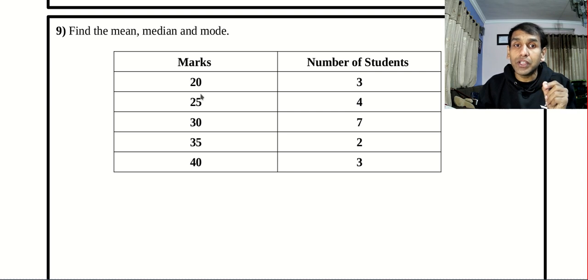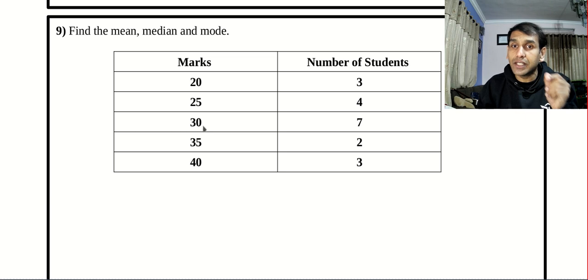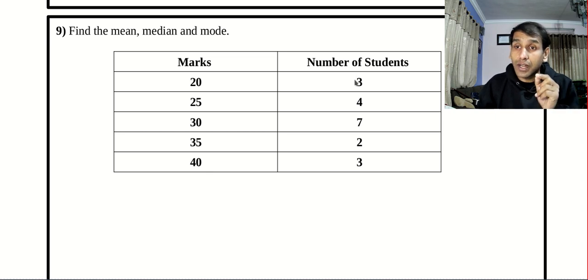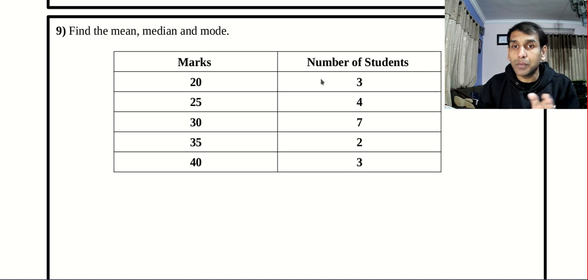In type 1 we used to write like 20, 20, 20, 25, 25, 25, 25, 30, 30, 30, 30, 30, 30 and so on. But in type 2 they have arranged according to the number of times each value repeats. So it means 20 repeats 3 times, 25 repeats 4 times, etc.